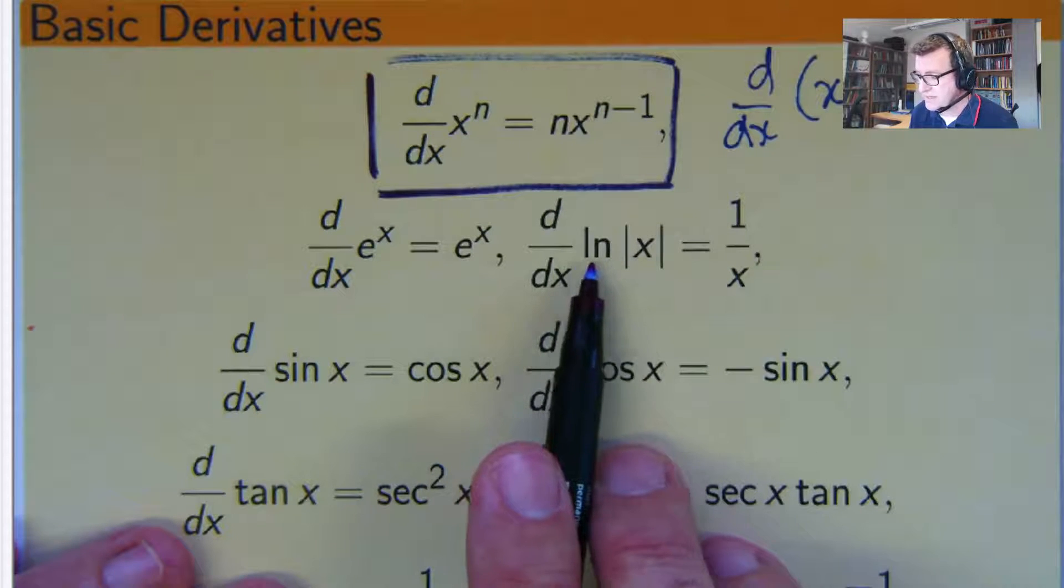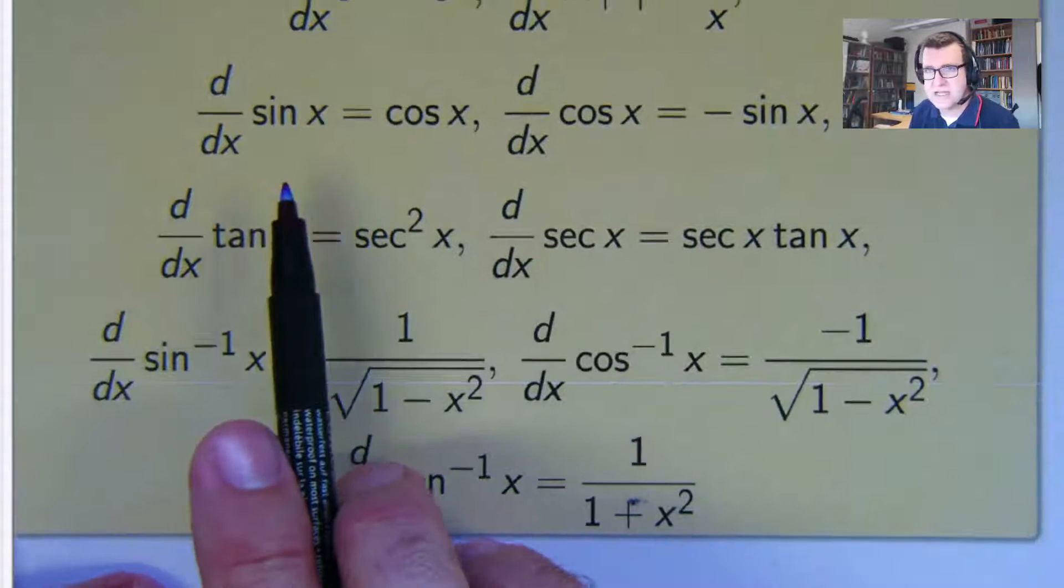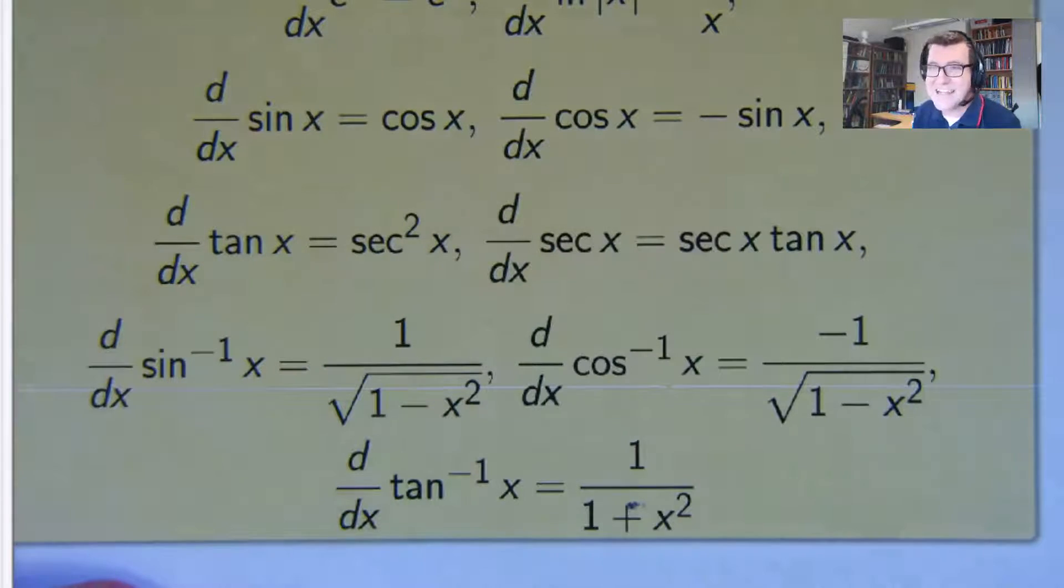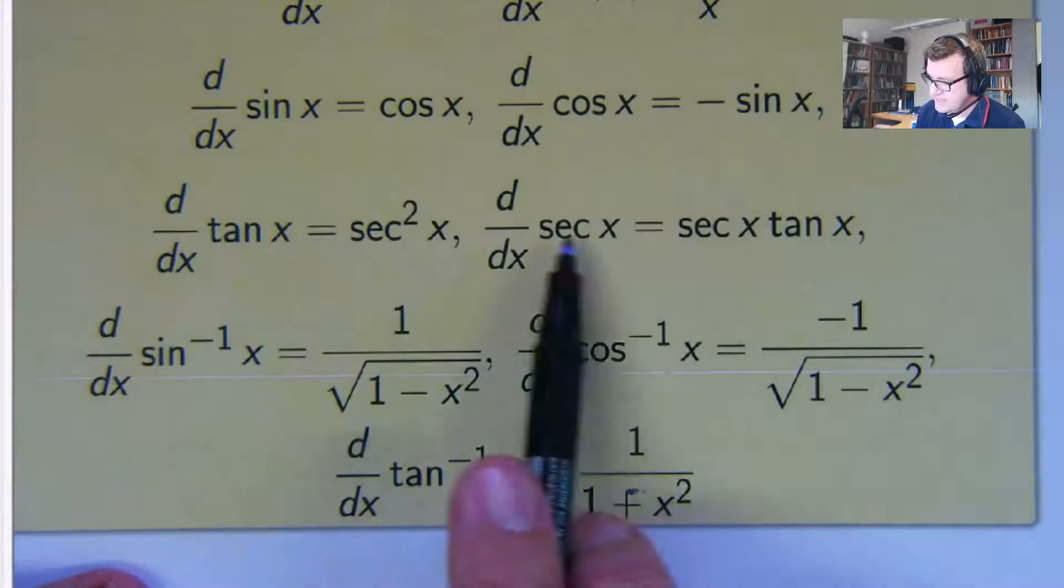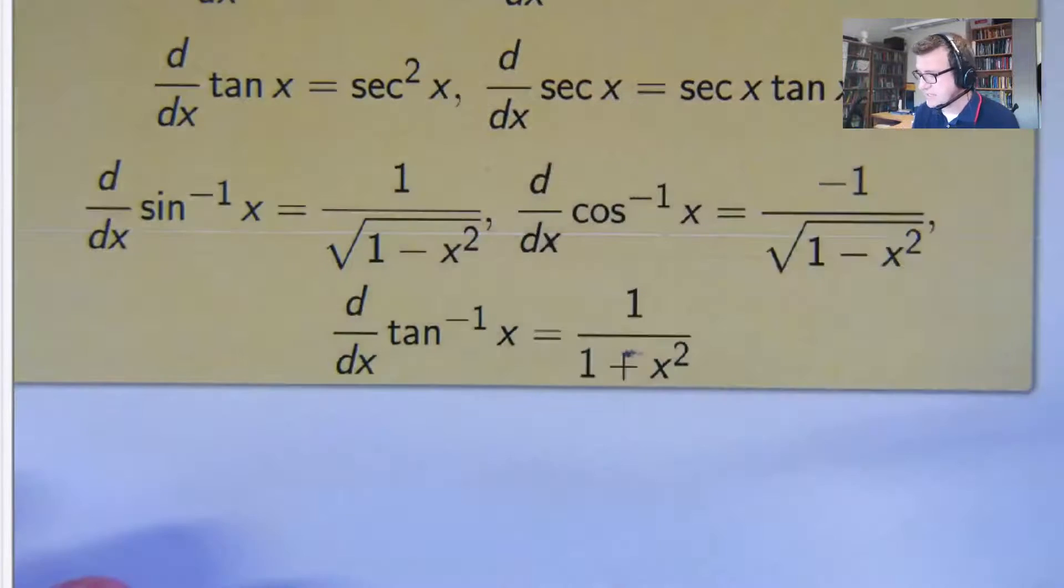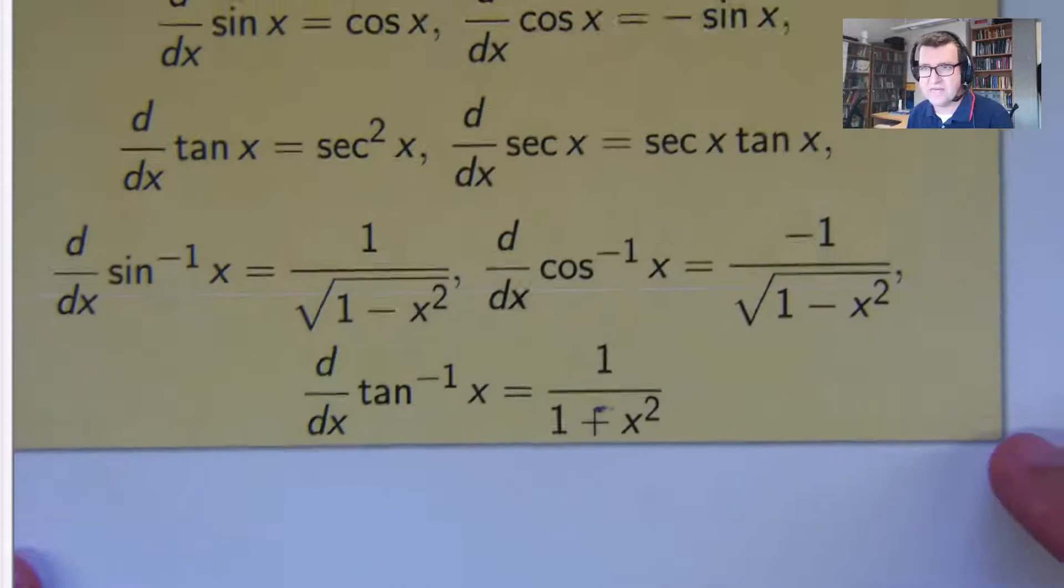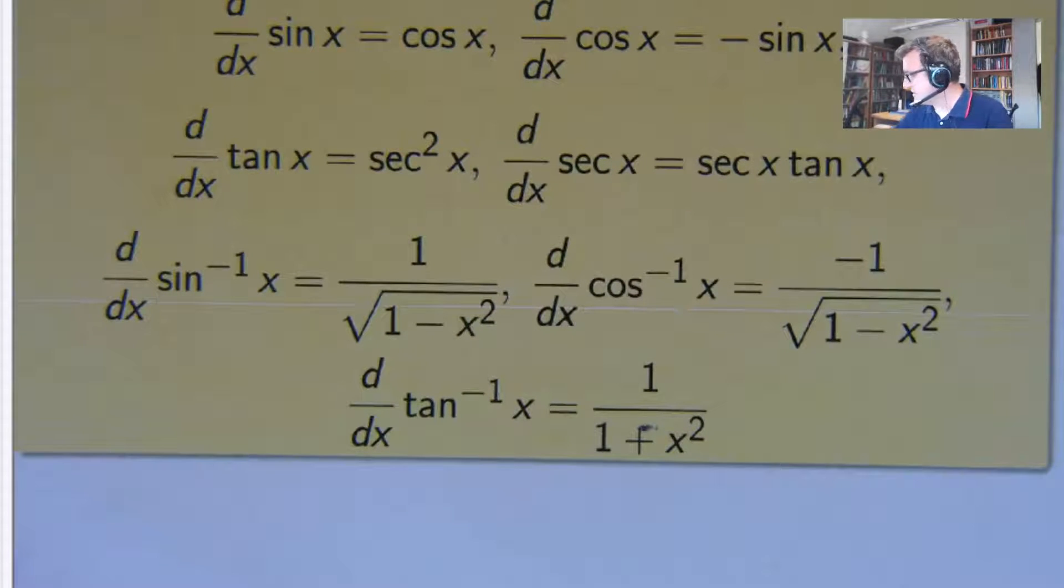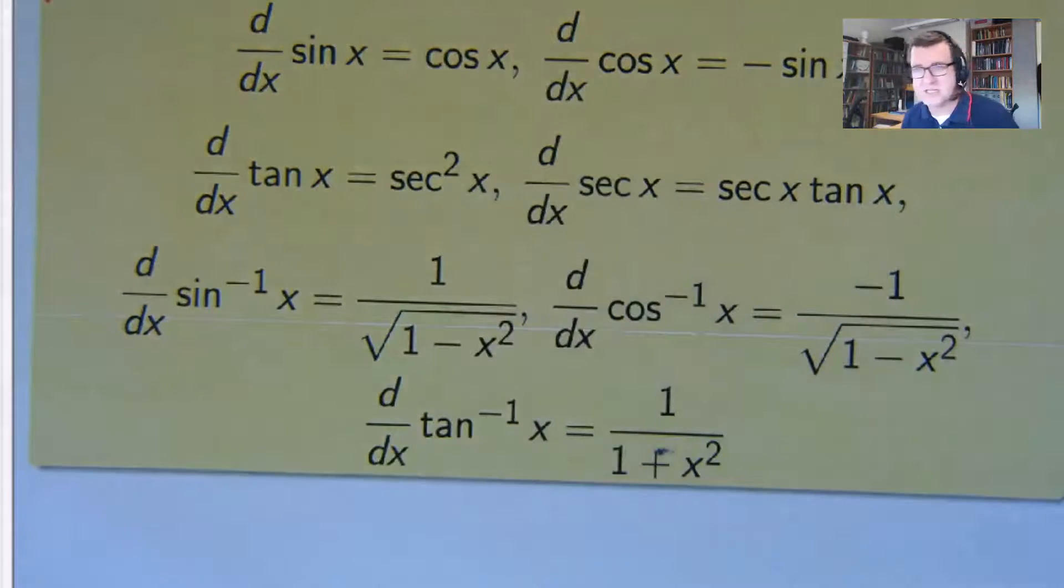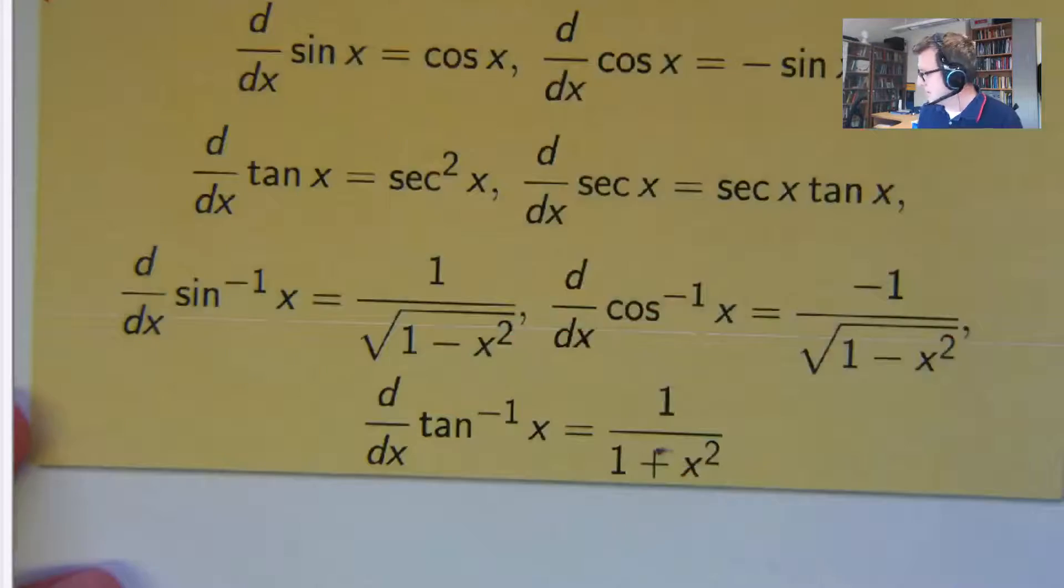If you differentiate some trig functions, like sine, then you get cosine. If you differentiate cosine, you get negative sine. And similar rules for tan and sec. If you differentiate inverse trig functions, then you get these messes here. Now these can all be verified, if you want, by using this original limit definition. But it's not easy. We would never, if you were differentiating, I don't know, two sine x, you wouldn't use the limit definition.